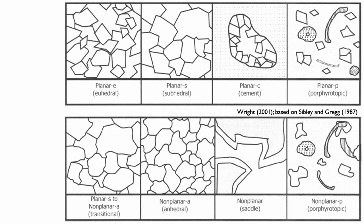You can have a subhedral dolomite, which is still a planar dolomite — planar S for subhedral — because you can still recognize those minerals very well, but in some cases you have more rounding and less well-expressed mineralogic forms.